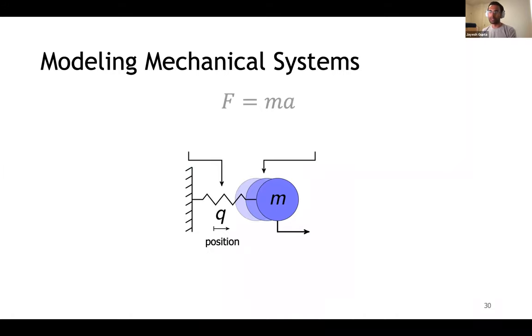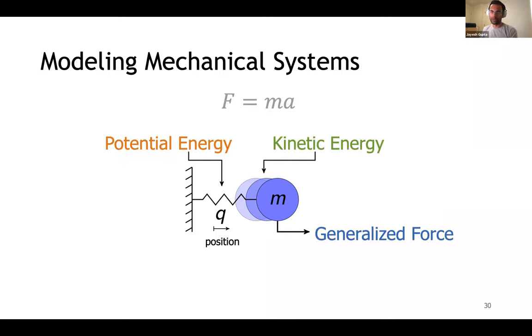I'm sure we all remember the standard Newtonian description of equations of motion, F equals MA. That is, all the forces acting on a system, say the spring-mass system, would be equal to the mass times acceleration of the mass. I'm sure you also remember about other properties of the system like its potential energy, kinetic energy, and any other external forces acting on the system.